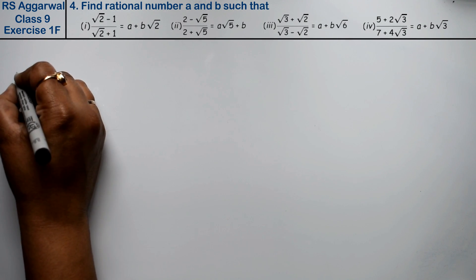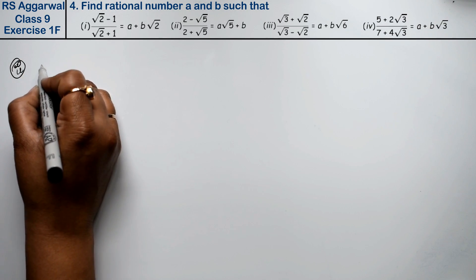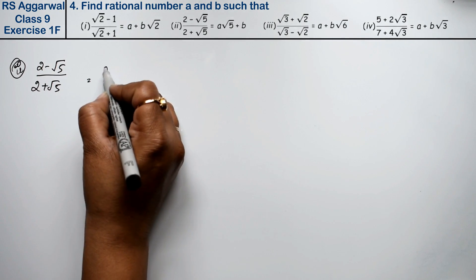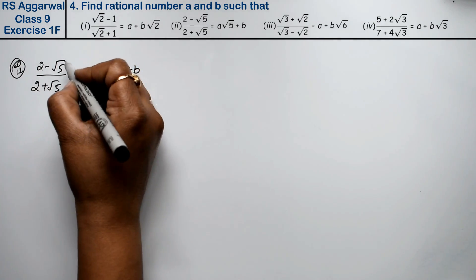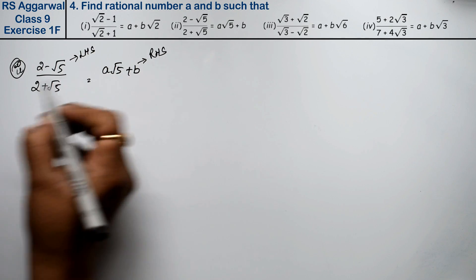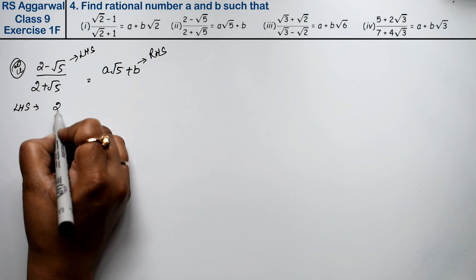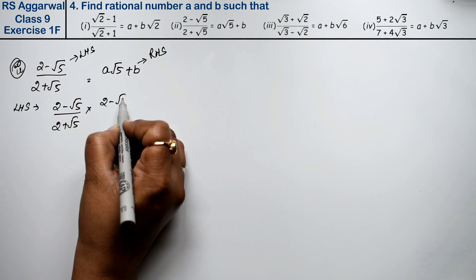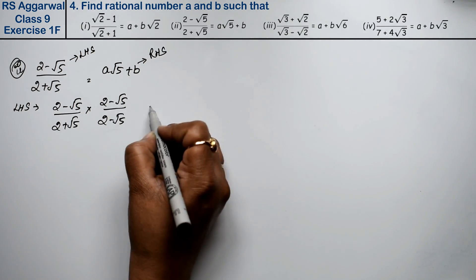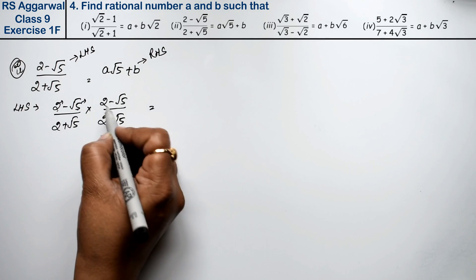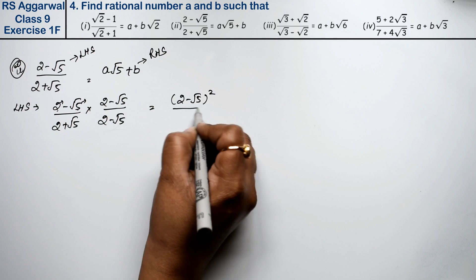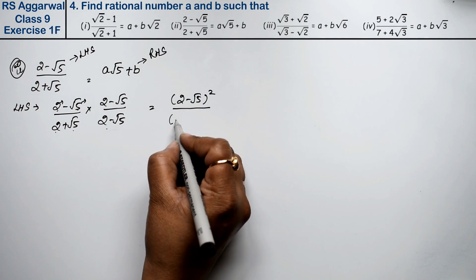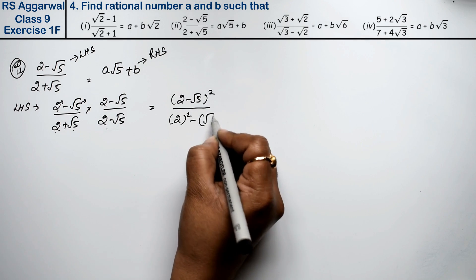Let's do the second part. Second part is: 2 minus root 5 upon 2 plus root 5 equals A root 5 plus B. We take the left-hand side and rationalize. Multiplying by 2 minus root 5 upon 2 minus root 5, we get A minus B times A minus B whole square upon A plus B times A minus B, giving us A squared minus B squared formula in the denominator.